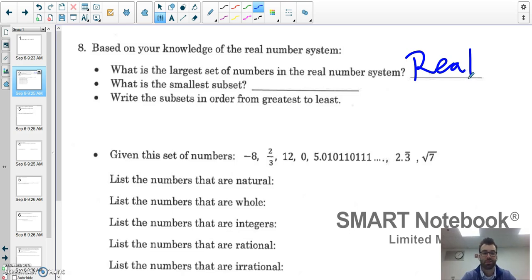Because they encompass every single subset of numbers. That means the smallest subset is going to be natural numbers. Remember the natural numbers are those counting numbers not including zero, so 1, 2, 3, 4, 5, 6, 7, 8, 9, 10, etc.